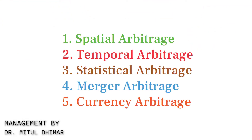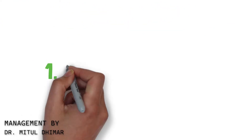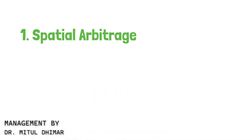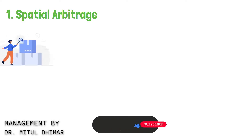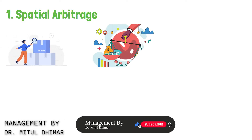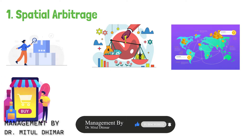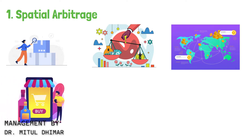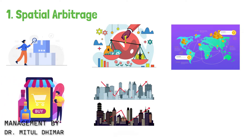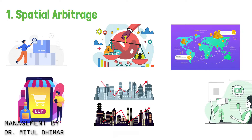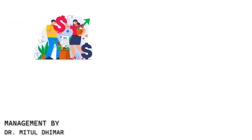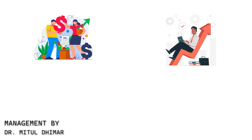There are 5 types of Arbitrage Strategy. First, Spatial Arbitrage. Spatial arbitrage involves taking advantage of price differences in different geographic locations. Let's say you find that the same product is priced lower in one city compared to another. You could buy the product in the cheaper city and sell it in the more expensive one for a profit.